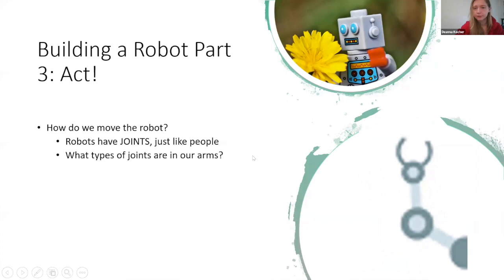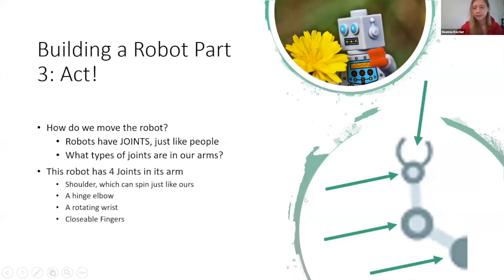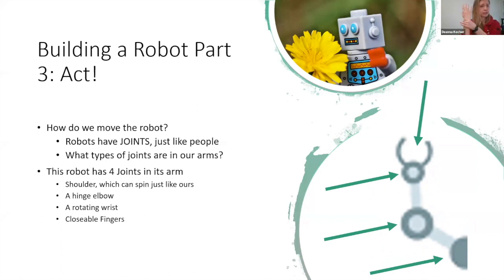Our robot has four joints: one, two, three, and four. The shoulder spins just like our shoulder. The elbow is a hinge joint just like our elbow. The wrist on the robot is a bit different — it can only turn/spin, it can't bend side to side. And then the robot has two fingers at the end that just close.